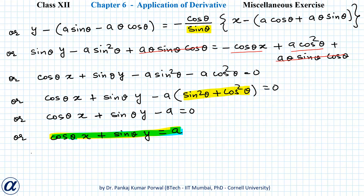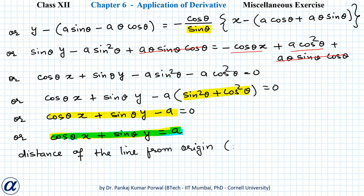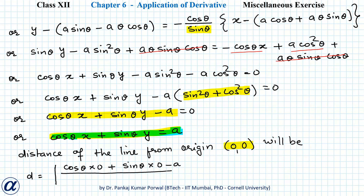Alternatively, we can find the distance explicitly. The distance of the line cosθ · x + sinθ · y − a = 0 from the origin (0, 0) is d = |cosθ · 0 + sinθ · 0 − a| / √(cos²θ + sin²θ) = |−a| / 1 = |a|, which is constant and does not depend on θ.